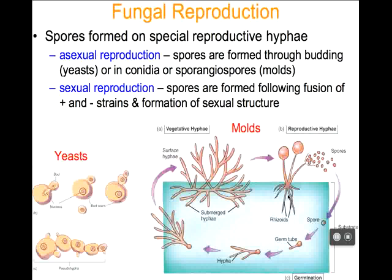Regarding reproduction of fungi: fungi reproduce by forming spores. The exception here are yeast, which do only asexual reproduction through budding. For mold reproduction, molds form spores. This is not the same thing as a bacterial endospore — a bacterial endospore is extraordinarily hardy and meant to survive harsh conditions. A fungal spore is a totally different thing and cannot survive like bacterial spores can; it's just there for reproducing.